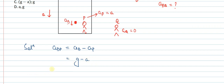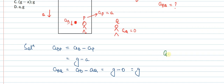Secondly, the acceleration of ball with respect to Q equals the acceleration of ball minus the acceleration of Q with respect to ground. The acceleration of ball with respect to ground is 'g', and the acceleration of Q with respect to ground is 0. So this gives us 'g'. Therefore, the acceleration of ball with respect to P is g minus a, and the acceleration of ball with respect to Q is g. This matches option C, which is our answer.